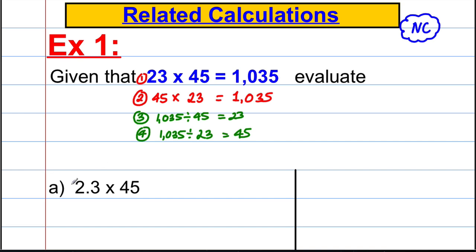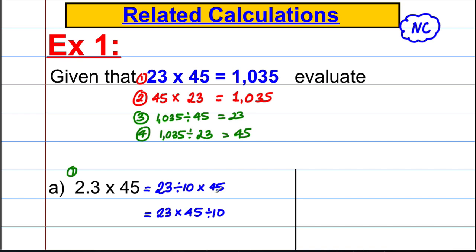The question we're asked is: what is 2.3 multiplied by 45? This relates to fact one. We can say 2.3 is 23 divided by 10, so it becomes 23 divided by 10 multiplied by 45. By BIDMAS, multiplication and division have equal order, so we can rearrange to 23 multiplied by 45 divided by 10. We know 23 multiplied by 45 is 1035, so dividing by 10 gives us 103.5.